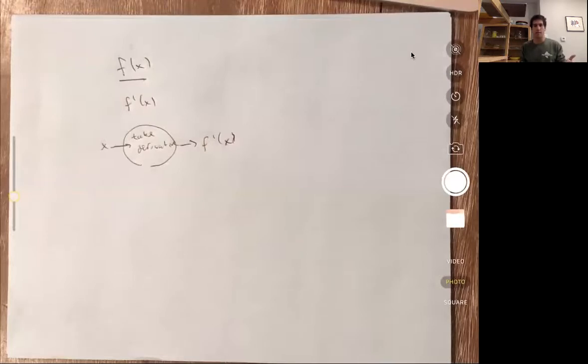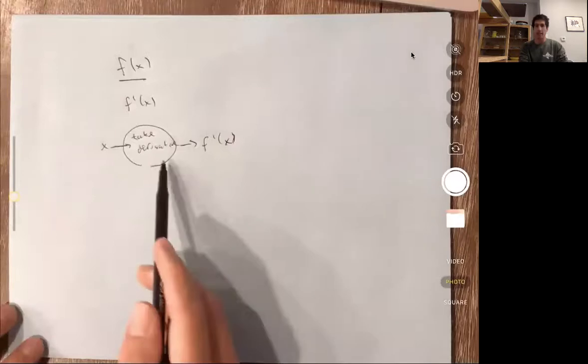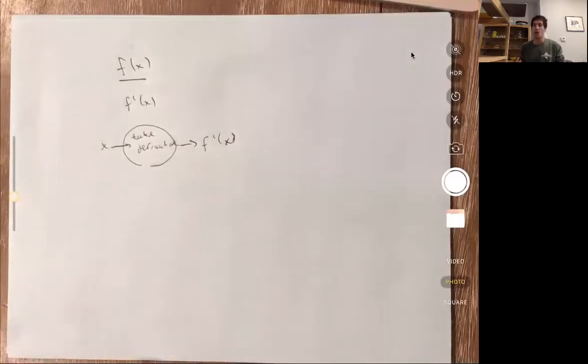So now we have this derivative function. We can work with it like we do any other function. So we can ask about its domain. We talked about that. When is x in the domain of the derivative? It's when this limit makes sense, when the slope of the original function is well defined. But we can also do other things with it. In particular, we can do calculus on this function. So we can ask about limits of this function. We can ask about continuity of this function. And in particular, we could take a derivative of this function.